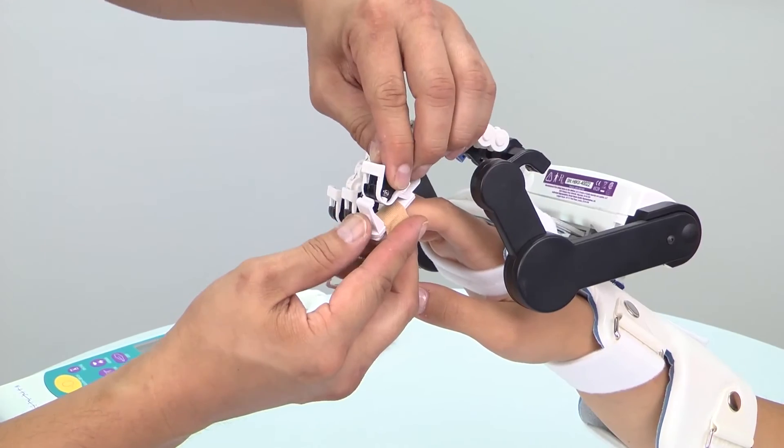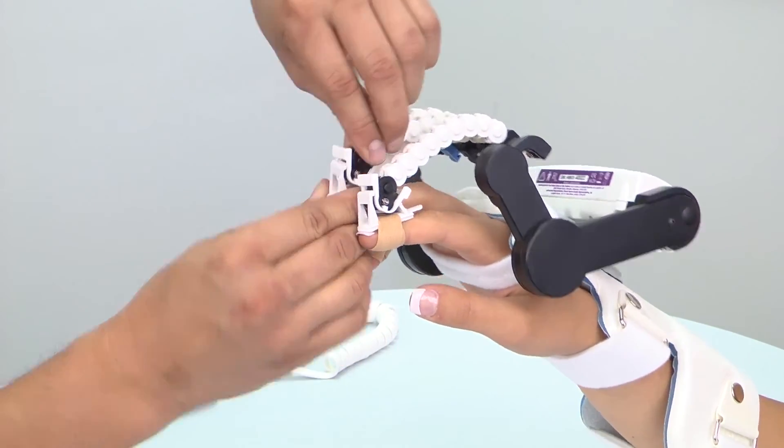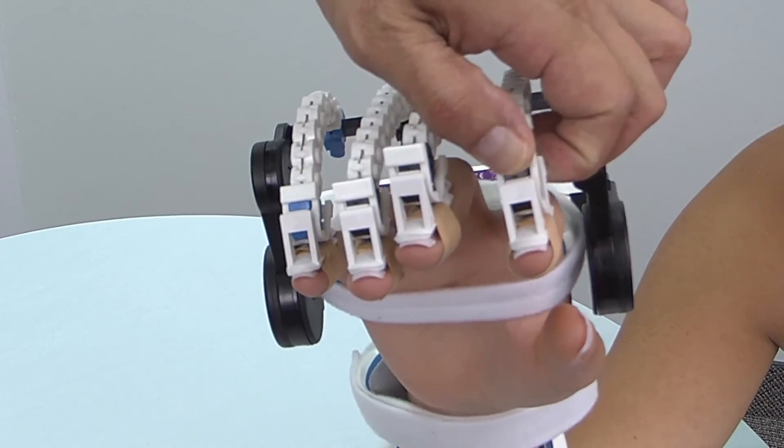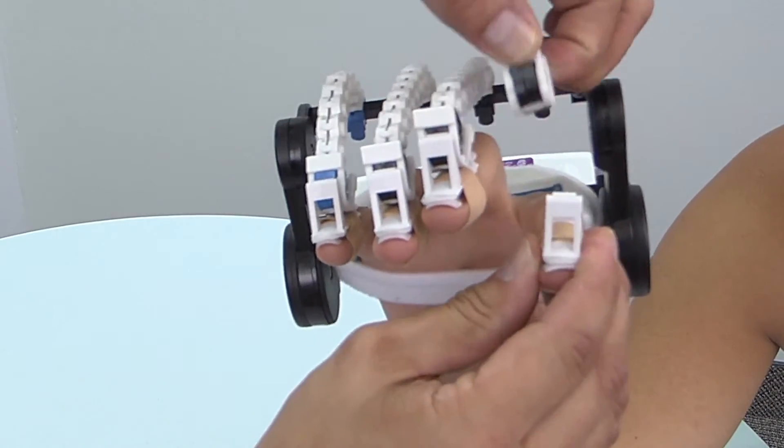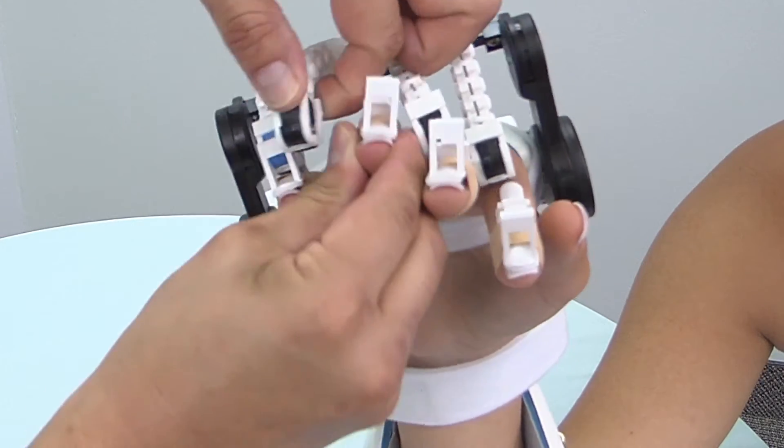Now, attach the finger actuators to the finger clips by rolling them into the finger clip until you hear them engage. Ensure that the B clasps are open. Then, detach the finger actuators, pinch together the B clasps, and slide the actuator out of the finger clip.